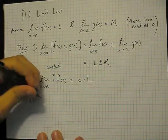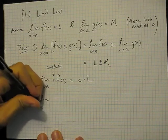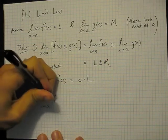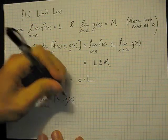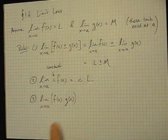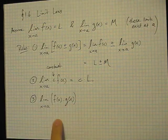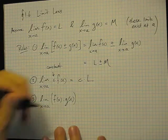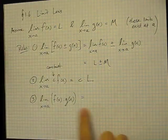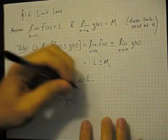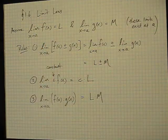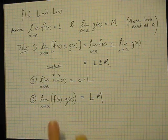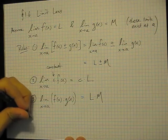Another rule we have is a rule for products of functions. Suppose you wanted to take two functions, multiply them, and take the limit of that. This is computed just as taking the product of the limits. Whatever the limits are of these two functions respectively, you can take the limit of their product just by taking the product of the limits.